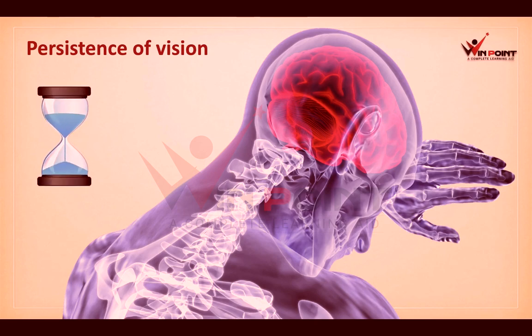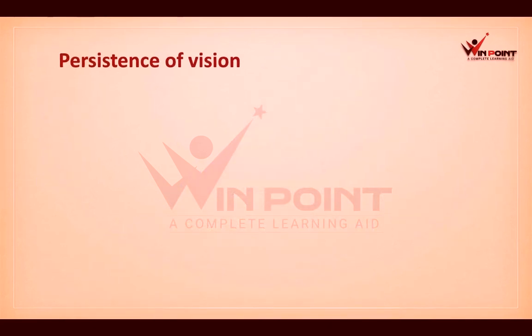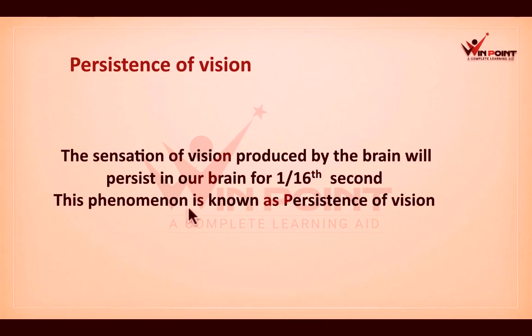This ability of brain is known as Persistence of Vision. We are seeing an object and the image of that object will be there in your brain. When we remove that object from your eyesight, still the image will be there in your brain for the duration of 1/16th second. The sensation of vision produced by the brain will persist for 1/16th second. This phenomenon is known as Persistence of Vision.